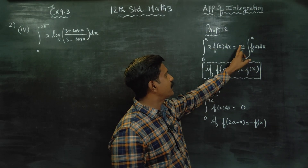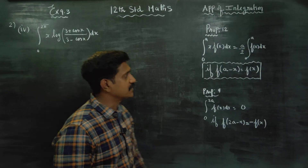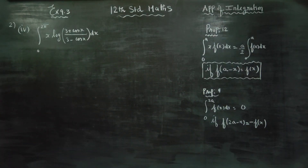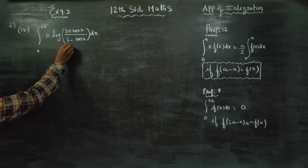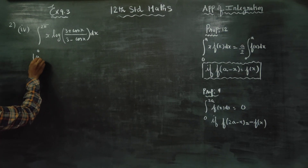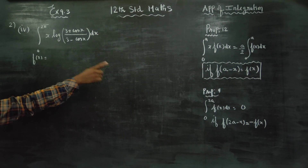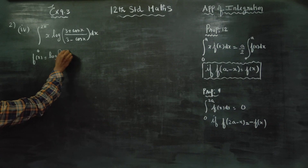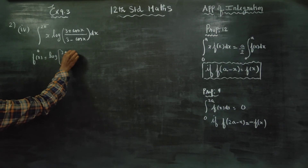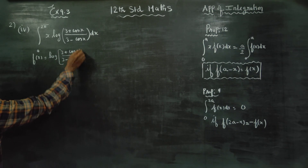This is f(x). In my problem, this is my f(x); this part is x·f(x). So f(x) = log((3+cosx)/(3−cosx)).